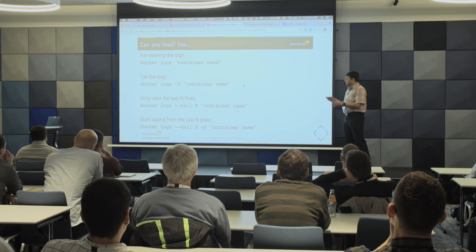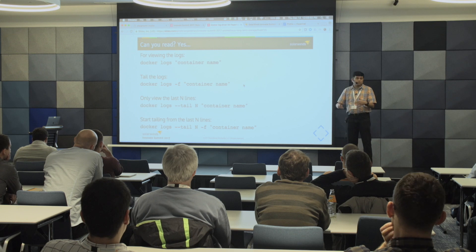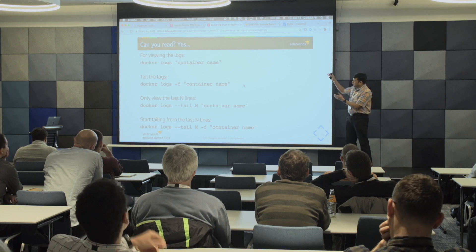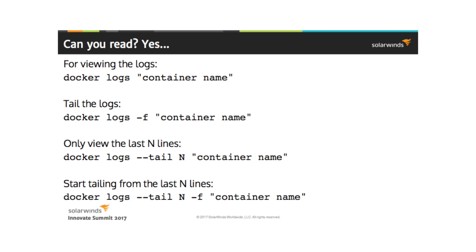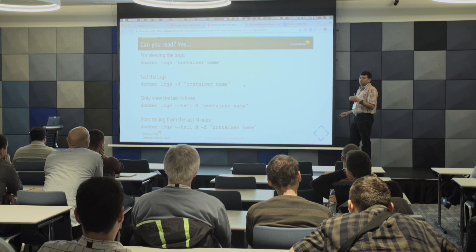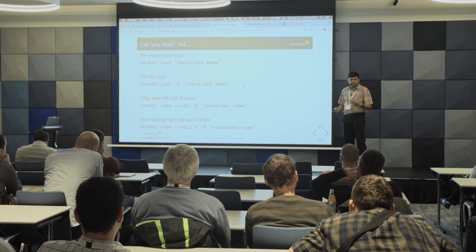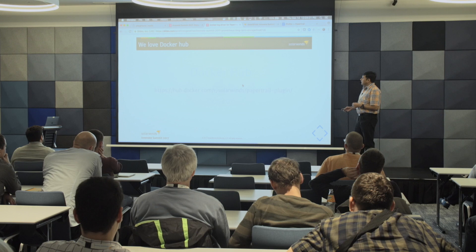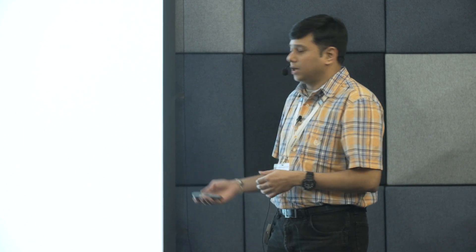These are some example use cases. Sending logs is straightforward. For reading logs, you use 'docker logs [container name]' with '-f' for follow and '--tail' to get only the last few entries — five, ten, or 500 — rather than all logs. The plugin is available on Docker Hub, it's free to use. The code is also on GitHub, feel free to check it out.